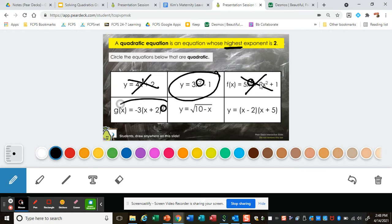Here, the biggest is 2. Here, there's no exponent. Here's a tricky one. If I actually multiplied these together, I would get x squared plus 3x minus 10. So this is actually a quadratic.